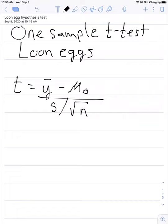It's y bar, our sample mean, minus mu sub zero, some value we're testing against, divided by the standard deviation, divided by the square root of the number of observations.